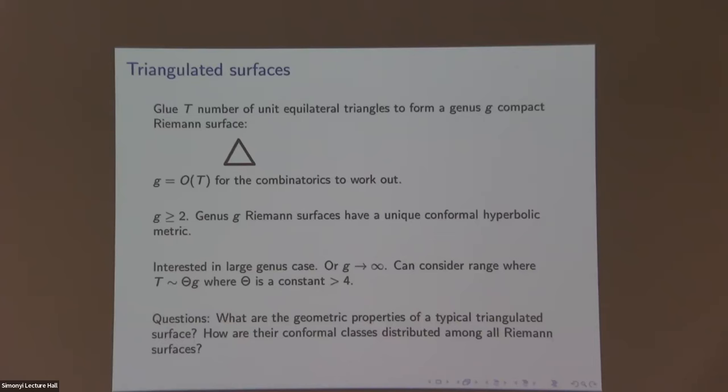A triangulated surface is basically a surface constructed in this way. We consider surfaces of genus at least two. In this situation, it is equivalent to talk about Riemann surfaces and hyperbolic surfaces — in particular, any Riemann surface has a unique conformal hyperbolic metric.